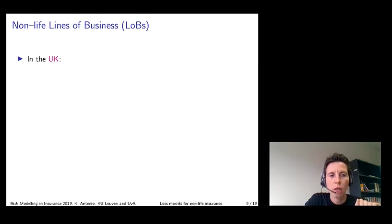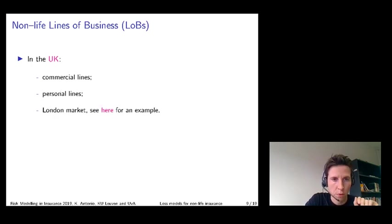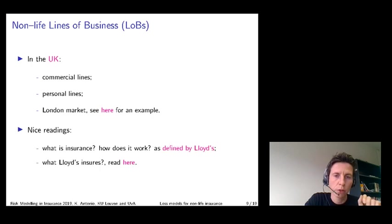Many other classifications of insurance products and covers exist. For instance, a typical classification in the UK distinguishes between commercial and personal lines, as well as the so-called London market. Commercial lines refers to protection offered to businesses, whereas personal lines refer to covers offered to individuals and families.